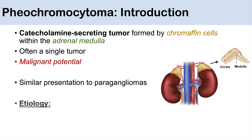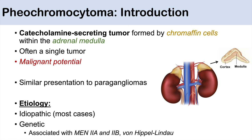The etiology of pheochromocytoma is often idiopathic in most cases, but there can be a genetic component. Family history is important to know. Some genetic conditions associated include MEN2A and MEN2B — those multiple endocrine neoplasia type syndromes — and also von Hippel-Lindau.